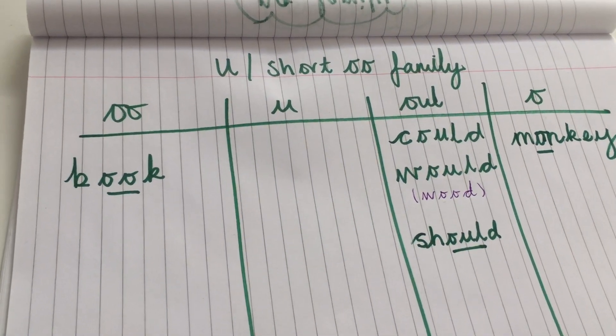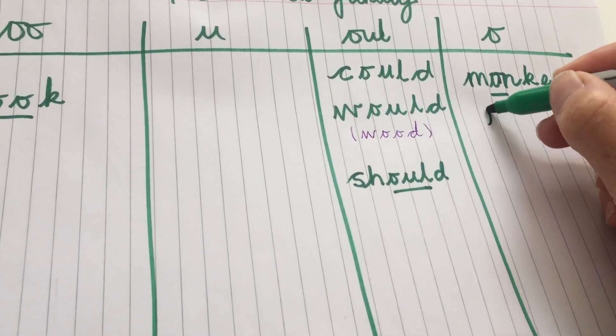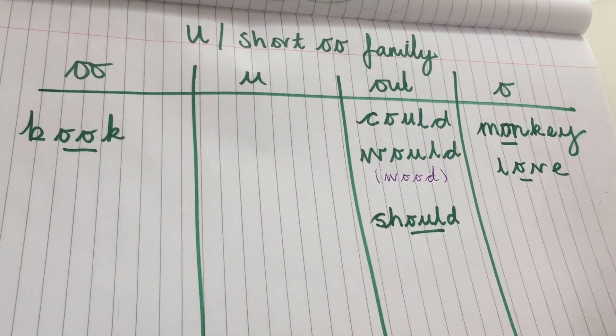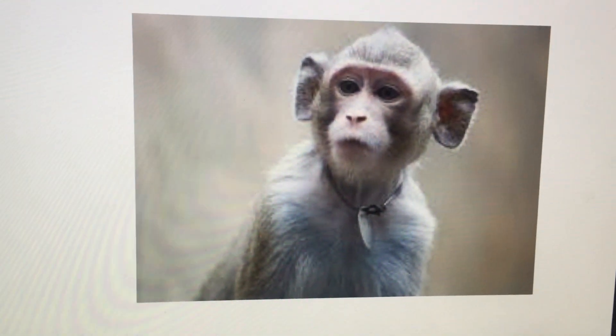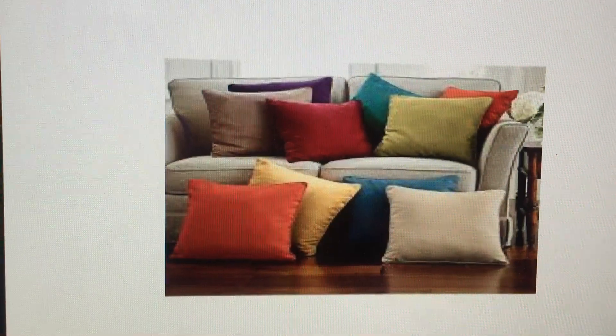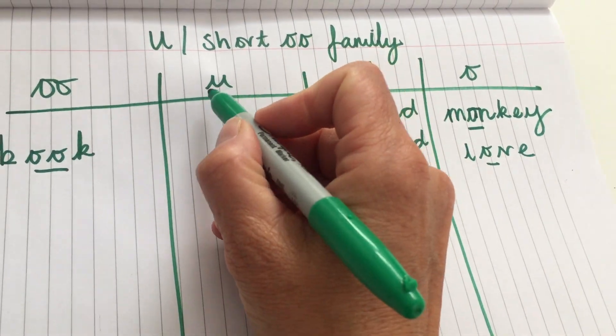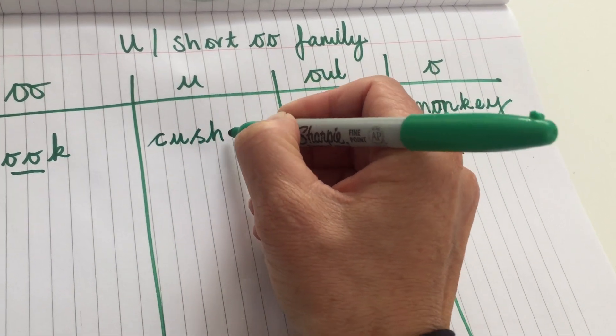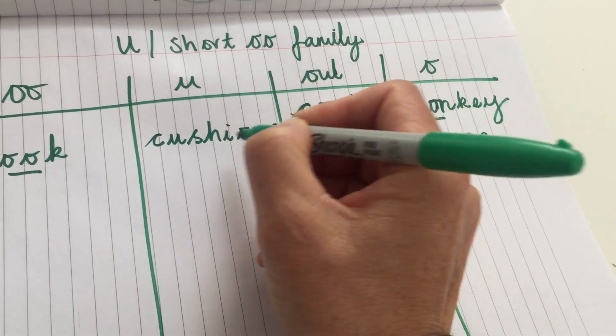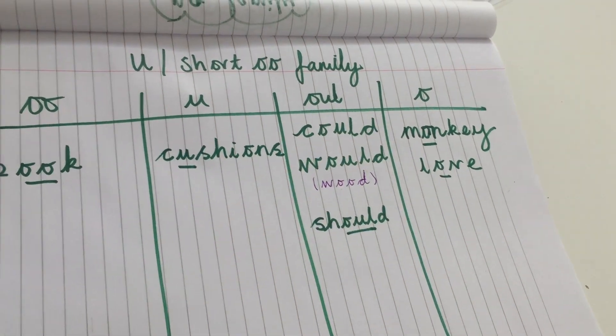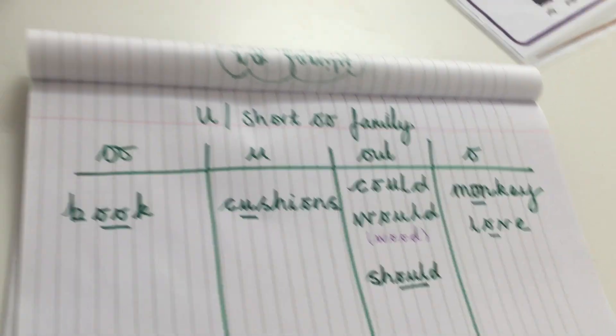The example they gave us right at the beginning was the word love, so we could add that one: L-O-VE. It's the O making the U sound. Very confusing phonics, isn't it? We've got some cushions, and you can hear the U sound again in cushions. Let's add that in, and that's the U made by the U: C-U-SHIONS. It's the U here, the U making the U sound in cushions. That's a very good list if you can spell all those words.